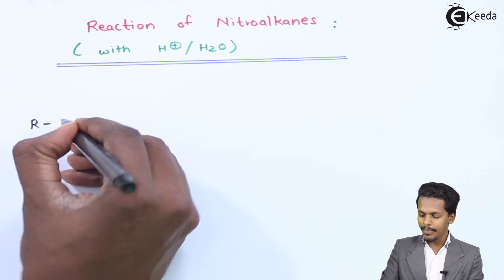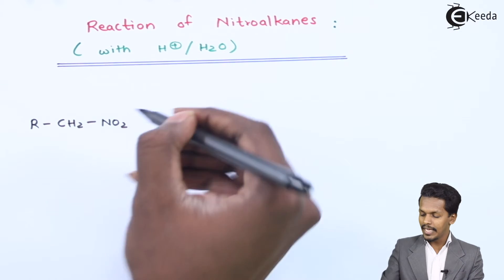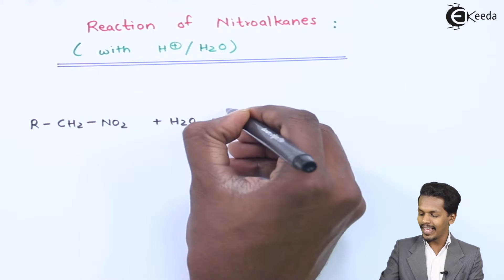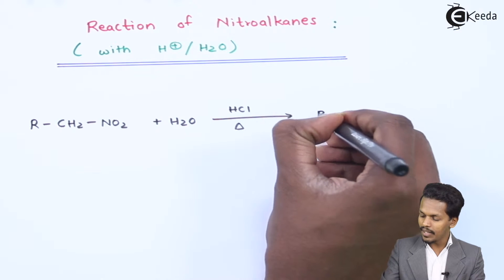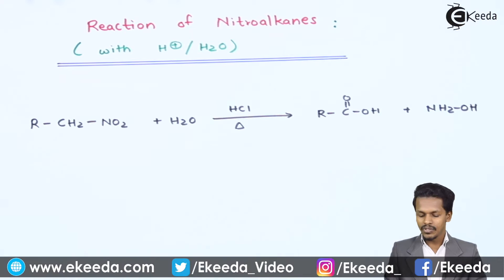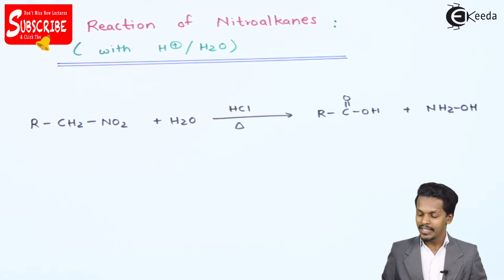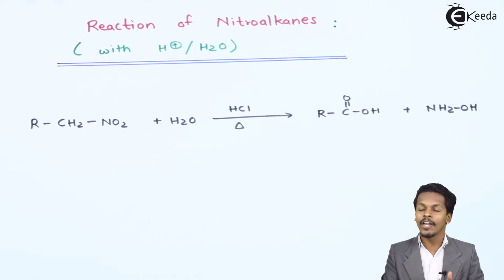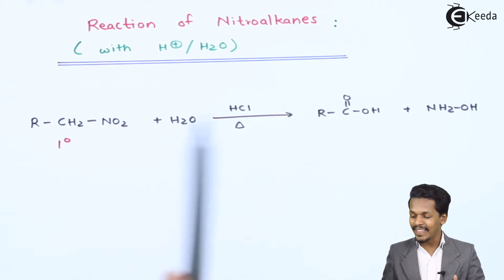Suppose if I am considering a primary nitroalkane that is RCH2NO2, and reacting it with water H2O in presence of HCl, and heating it. The product that we could get is R-C(=O)-OH along with NH2OH. This nitroalkane has been converted into a carboxylic acid, while NH2OH is known as hydroxylamine. So this is how we can convert a primary nitroalkane into a carboxylic acid using hydrolysis.